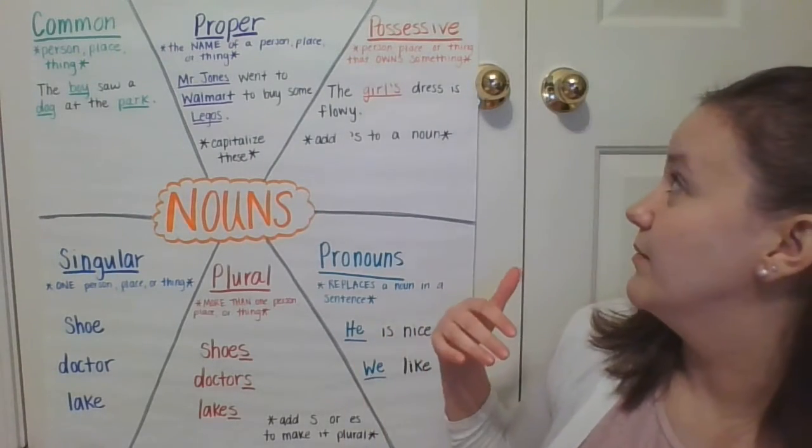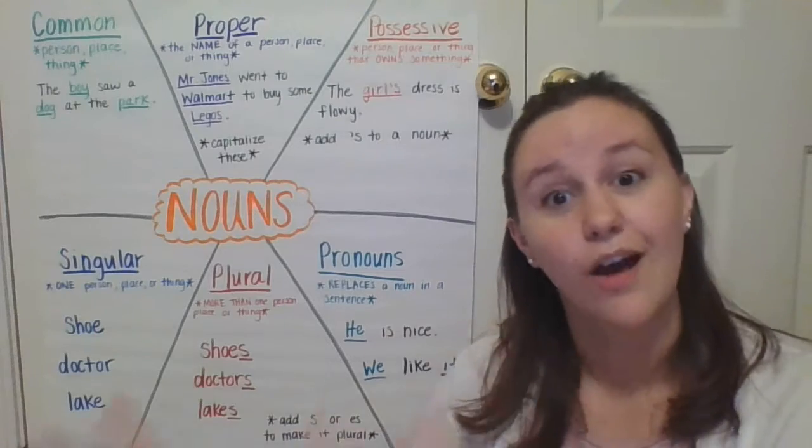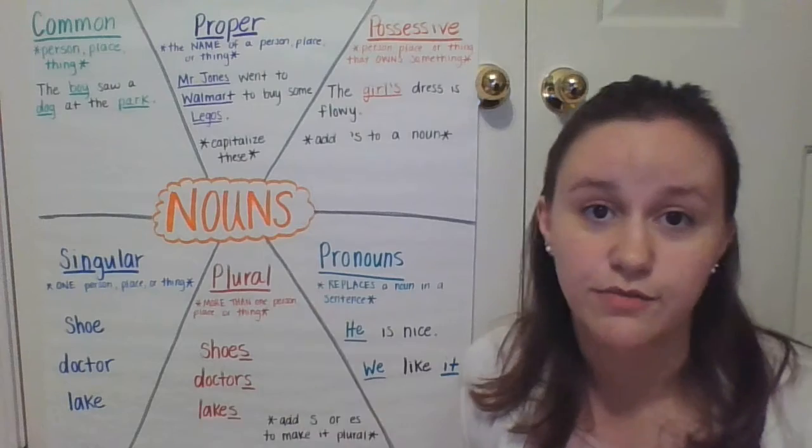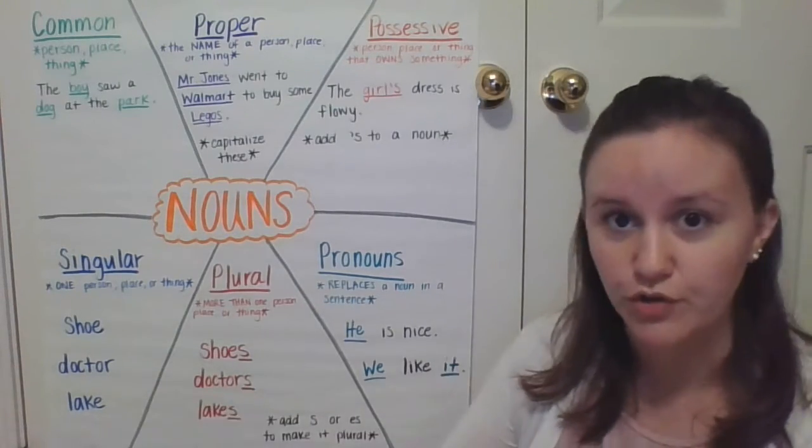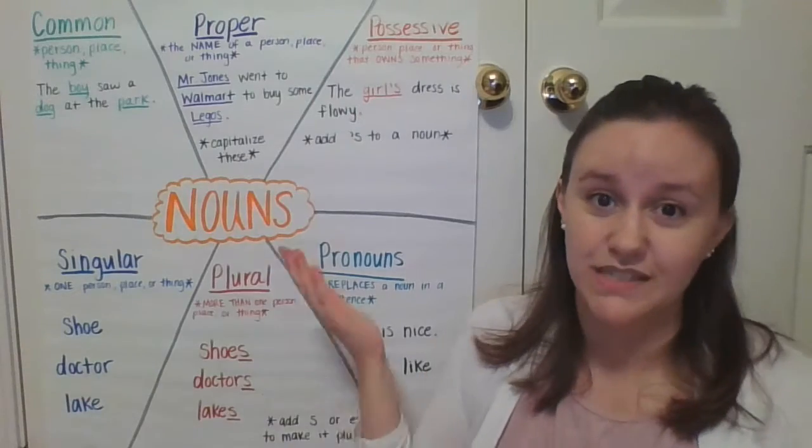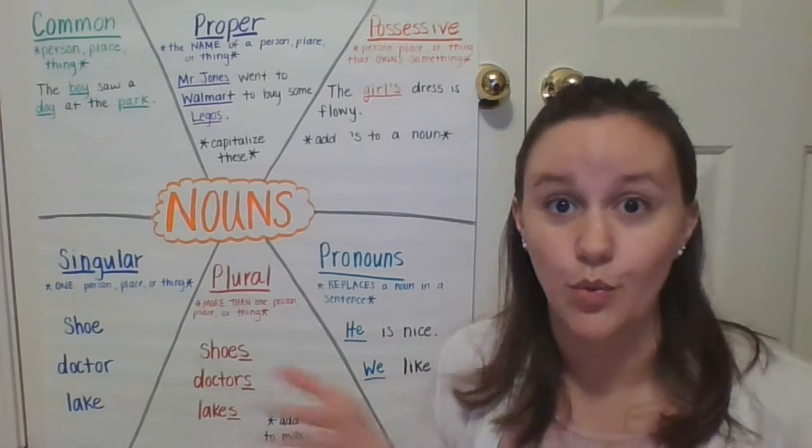Possessive nouns is a person, place, or thing that owns something. Something belongs to them. The girl's dress is flowy. Whose dress? The girl's dress. Usually you just add an apostrophe S and you get a possessive. It means somebody possesses or owns something.